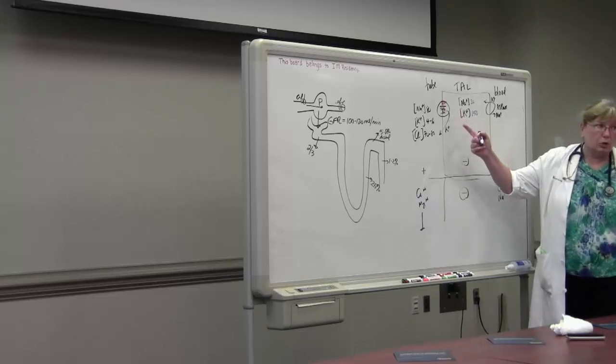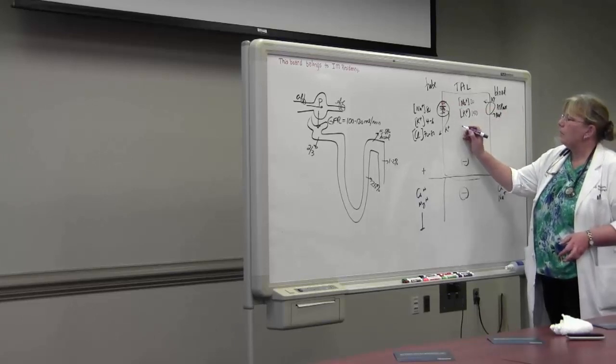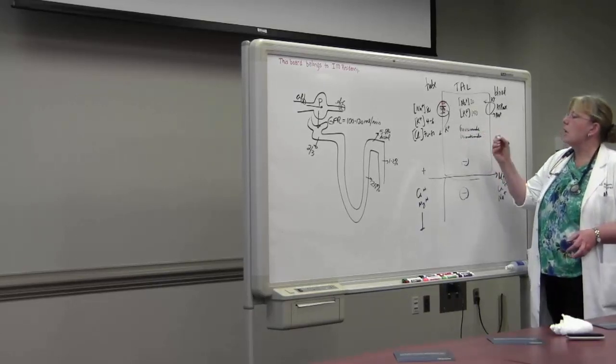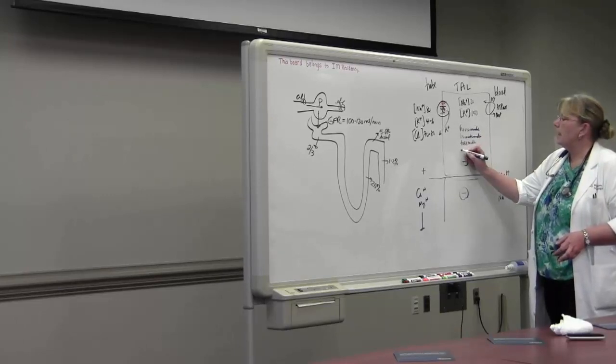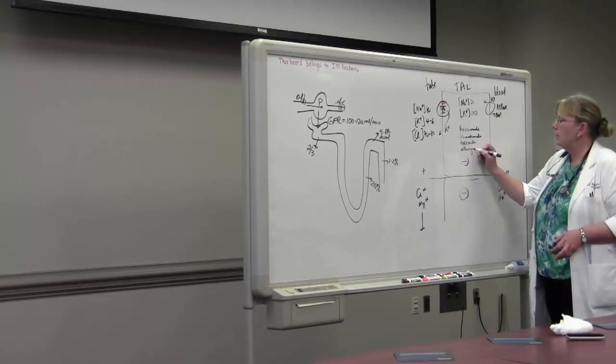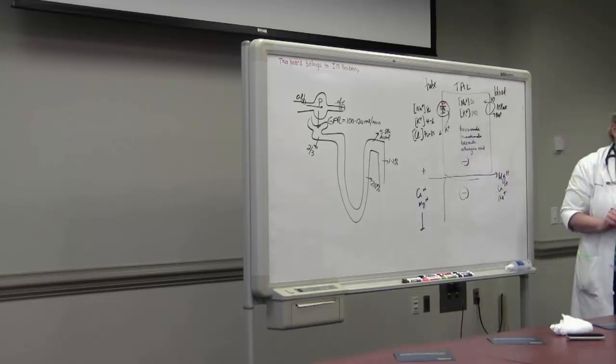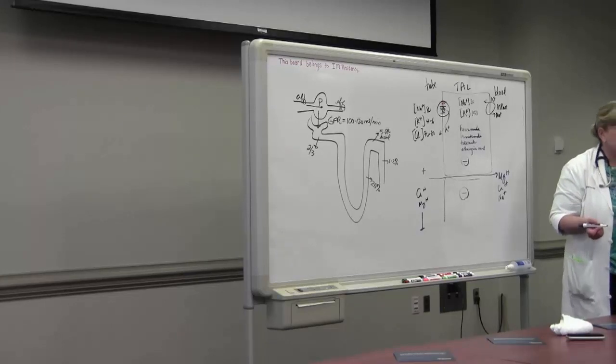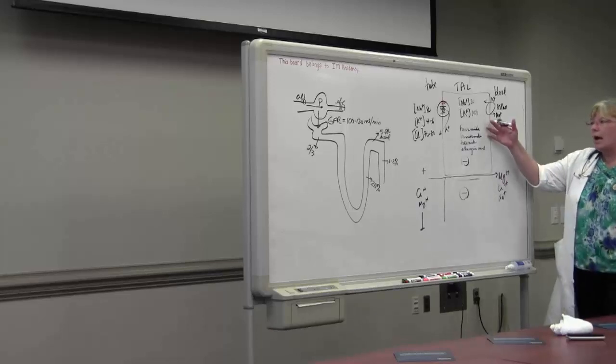So the drugs that work here are the loop diuretics. I know you guys know this. They sit on the chloride seat. And we have a few of these. We have furosemide, bumetanide, torsemide, and ethacrynic acid. Those are your loop diuretics. Why do we need four of them? Don't they all work by the same mechanism? Yes, they all work by the same mechanism. That's the first point. They all sit on the chloride seat. They all work by the same mechanism. So why would we use different ones? Let me run through this.